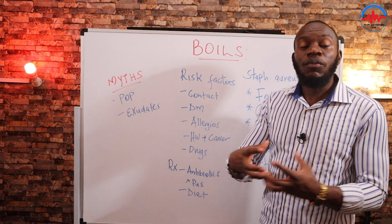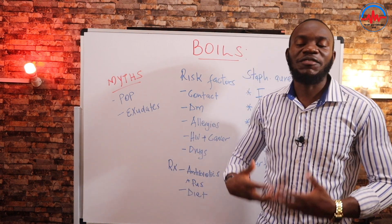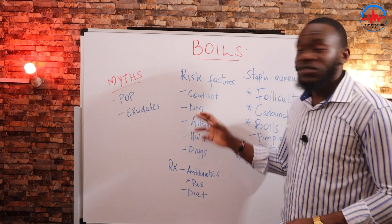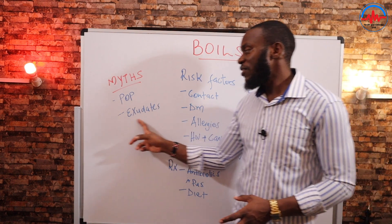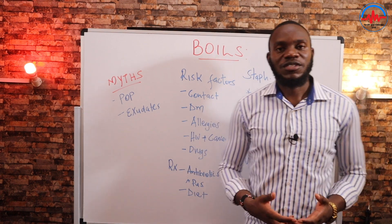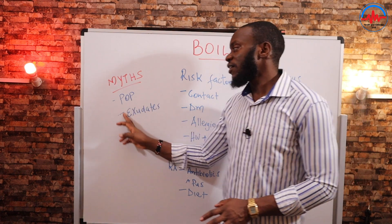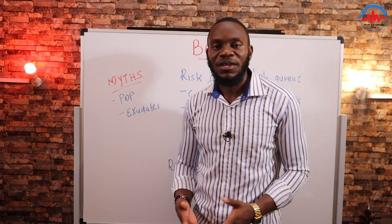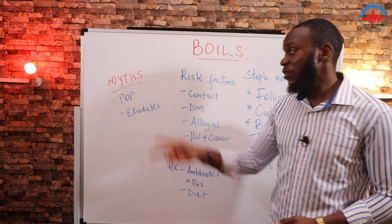Myth number two: the boil comes as a result of fat exudates — that it's the body clearing fat from the system. This is not true. Possibly because people with diabetes may already have a lot of fat accumulating in their system, that's maybe where this myth came from. However, boil infections are bacterial infections and have nothing to do with fat accumulation. The pus is bacterial exudate, not fat being cleared from the system. To actually clear fat, you need to fast — and that will also help clear these risk factors.